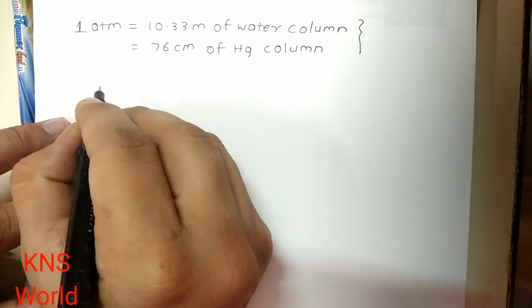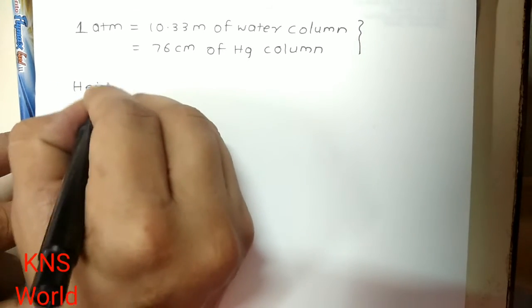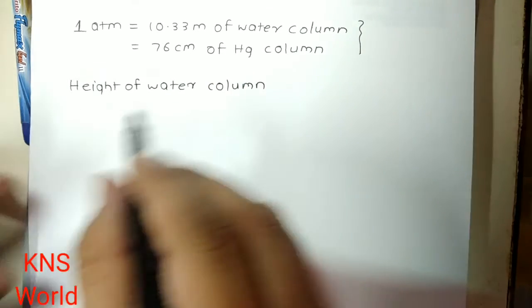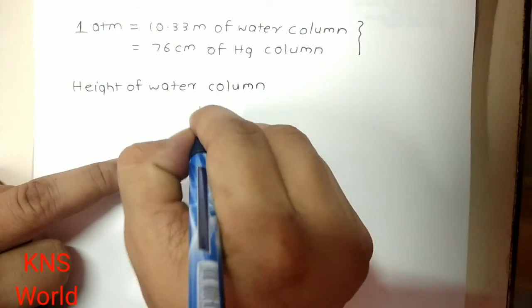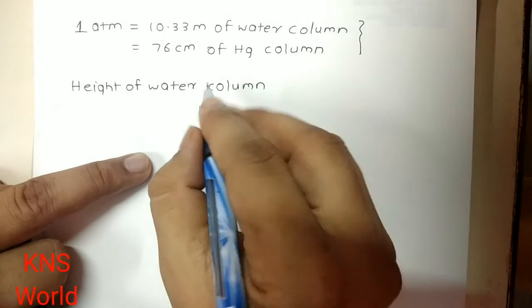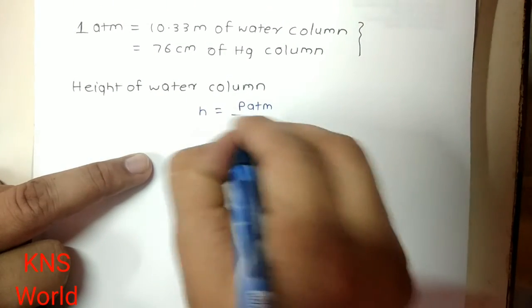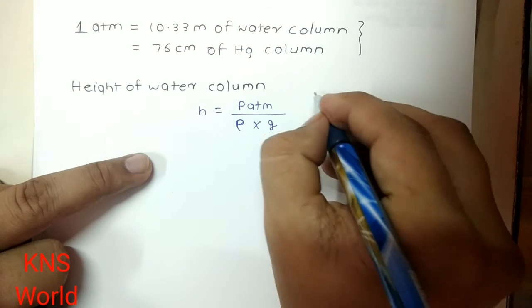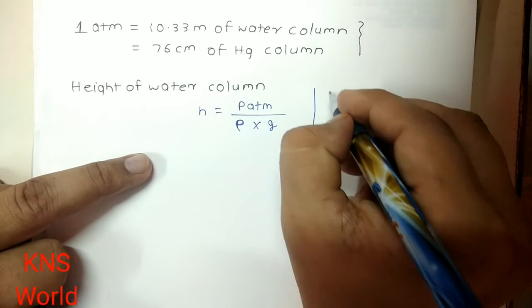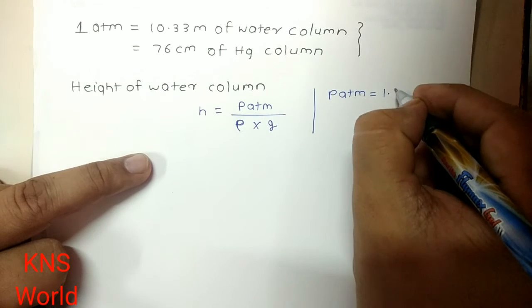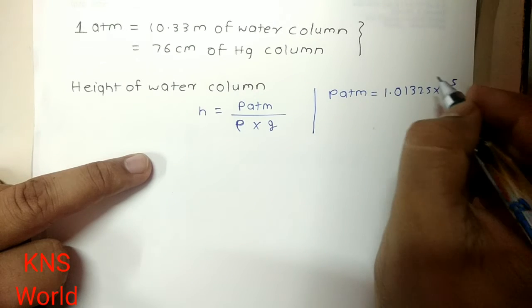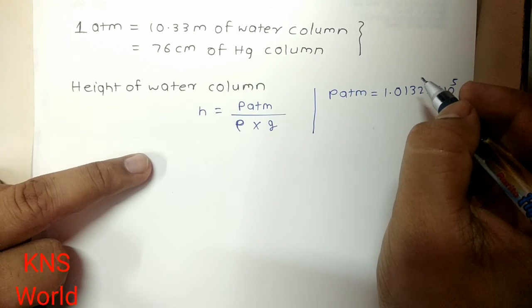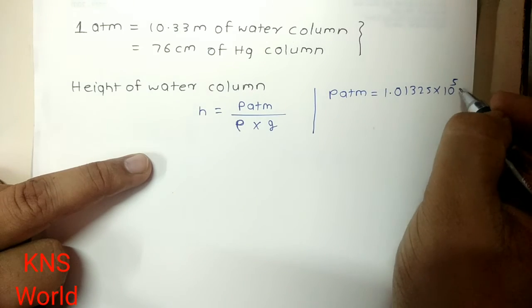So we have one formula that is height of water column H is equal to P atmospheric upon density, this is the density, into g. So we all know that P atm value is 1.01325 into 10 raise to 5. So this is in Pascal.